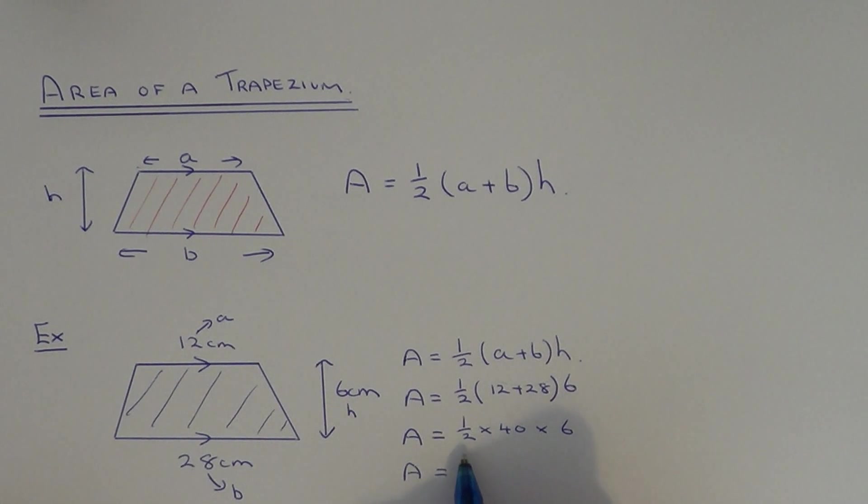We just need to work this out now. You can do this in different ways. You could work out forty times six and then half the answer. Or you could do a half times forty and then times the answer by six. I'll go with a half times forty first. A half times forty is twenty. And we have to times that by six.